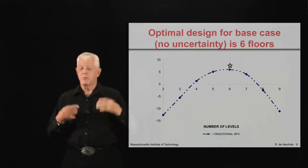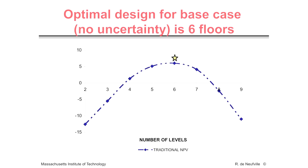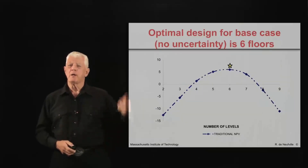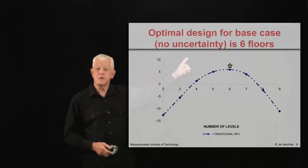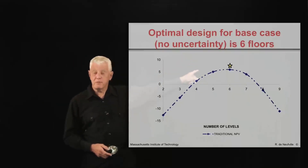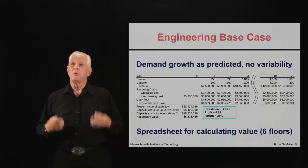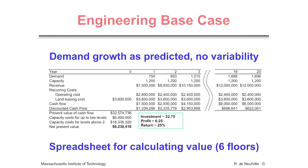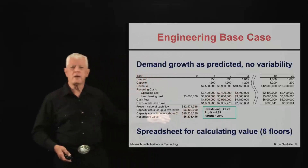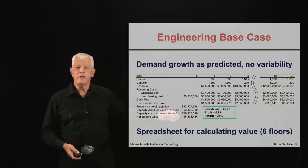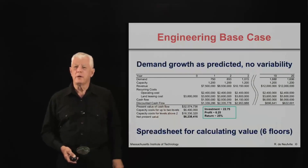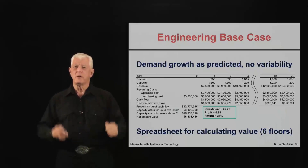In this particular design, with the representative values that we used, the optimal design — the one that maximizes the expected net present value — is six stories. We calculated this using a spreadsheet, where we had all the various costs and revenues, what might happen in different years as demand grew, leading to a simple calculation of net present value. The optimum design is six stories. That is the result of the typical engineering process applied in this case.